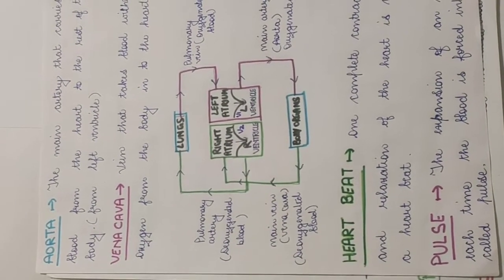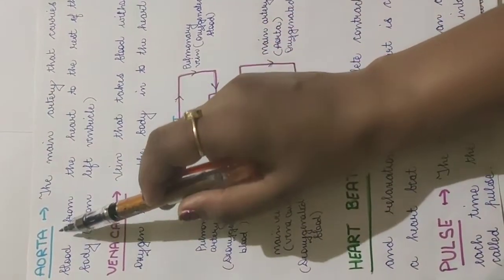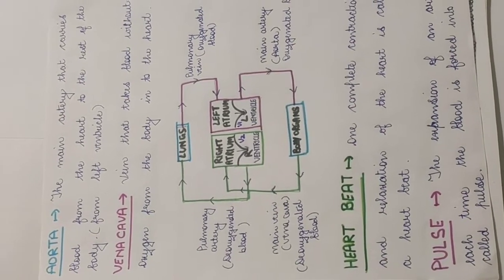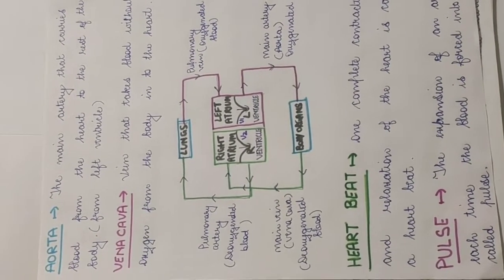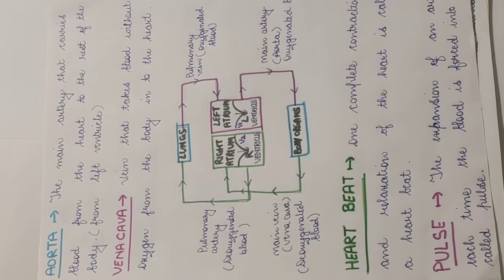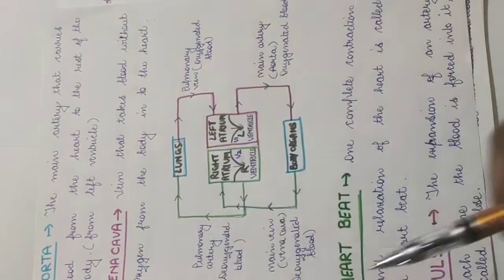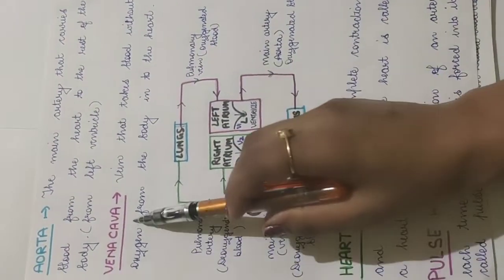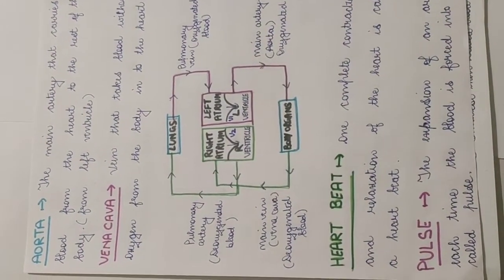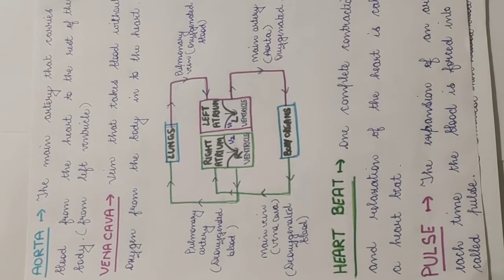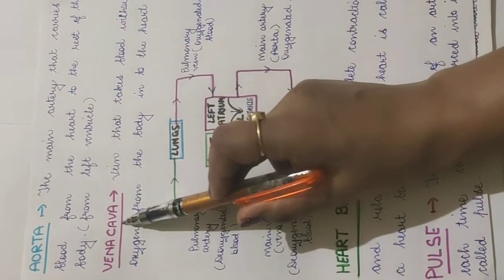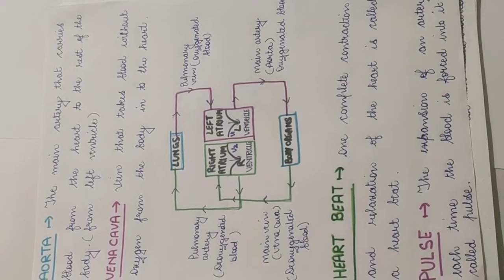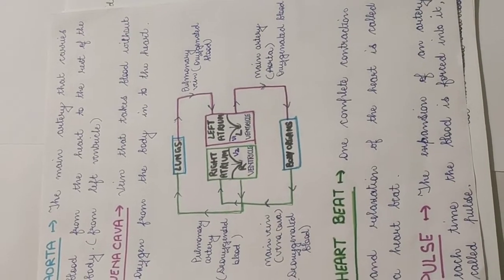The vena cava refers to the main veins. There are two vena cavas in the heart: the superior vena cava from the upper region and the inferior vena cava from the lower region. The vena cavas carry deoxygenated blood towards the heart from the body.